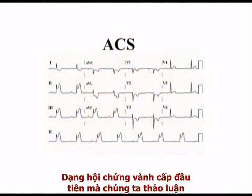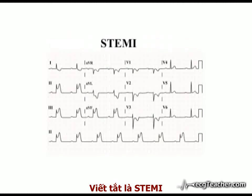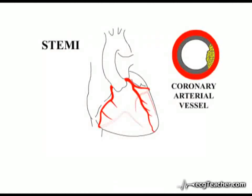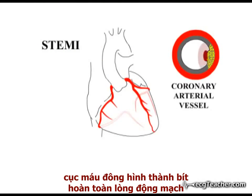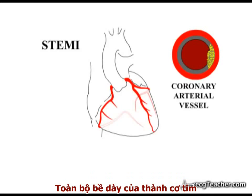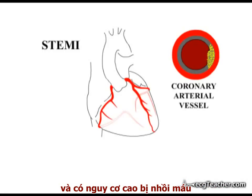The first type of acute coronary syndrome we will deal with is termed ST elevation myocardial infarction, or STEMI for short. When an atheromatous plaque ruptures in a coronary vessel and the clot which forms completely obliterates the vascular lumen, the entire thickness of the myocardial wall supplied by that vessel becomes ischemic and is at risk of infarction.